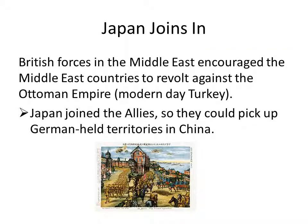So how do we make this a world war? We get the East involved. British forces in the Middle East encouraged Middle Eastern countries to revolt against the Ottoman Empire — modern-day Turkey. Then Japan joined the Allies so they could pick up German-held territories in China. Really, it's as if every major country in the world was a playing card, and this war was a way of getting more countries into your hand.